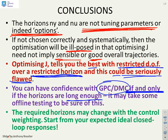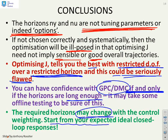The required horizons as well may change, and this is important, they may change with the control weighting. So you can't say here's my system and therefore the required horizons are X or Y because when you change the control weighting the required horizons may change. And so my recommendation, and we'll cover this in a couple of videos time, is you start from your expected ideal closed loop responses and that will give you an idea of the sort of horizons that you need.